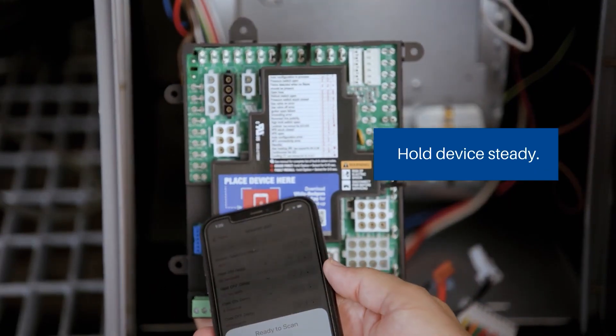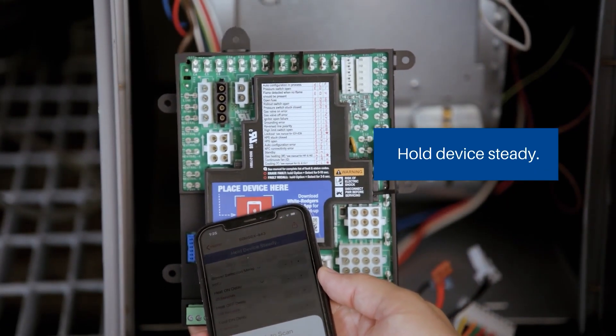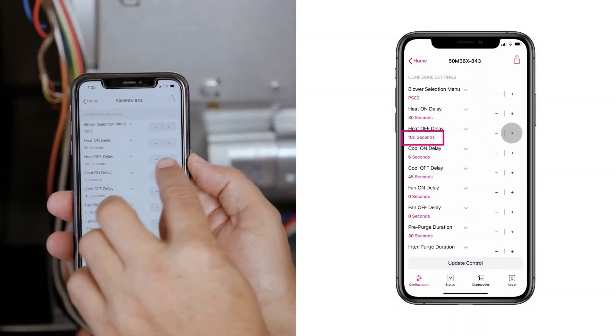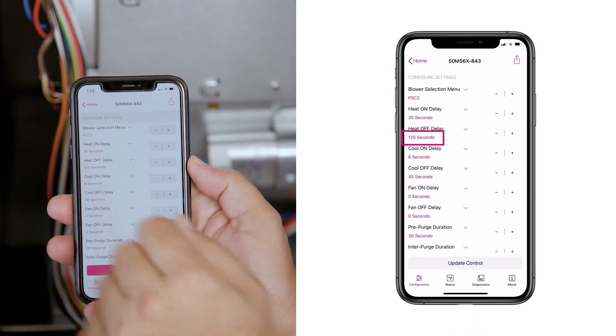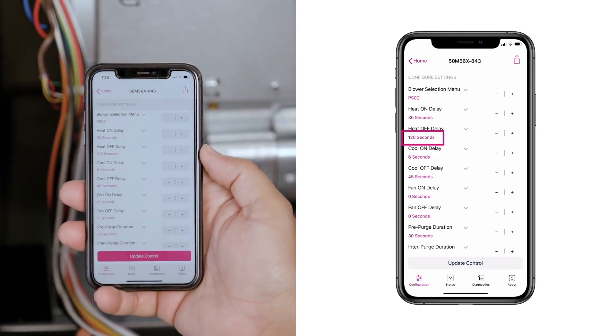Through simple programming, the module can be configured to replace over 500 single-stage hot surface ignition controls in both PSE and ECMX systems.